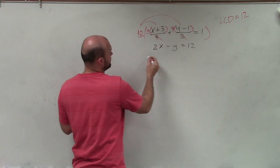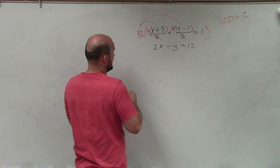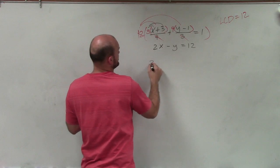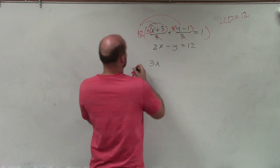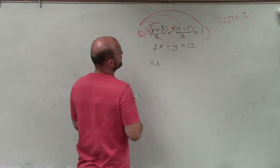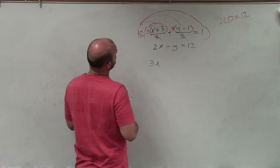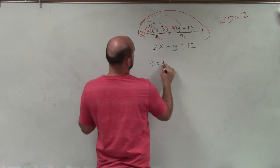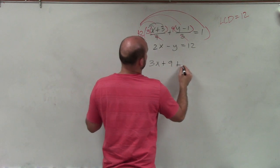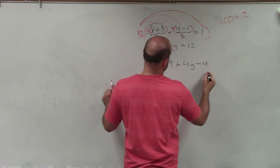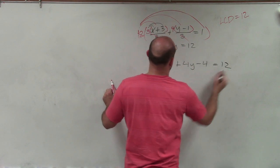So therefore I'm going to be left with a new equation that I can now apply the distributive property for. I've also got to multiply 12 over here as well. So therefore I'm going to have 3x plus 9 plus 4y minus 4 equals 12.